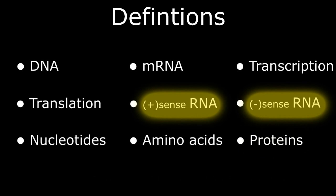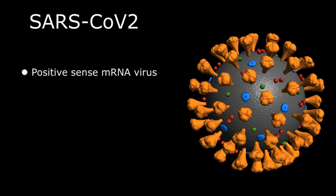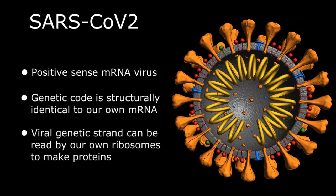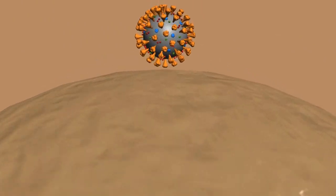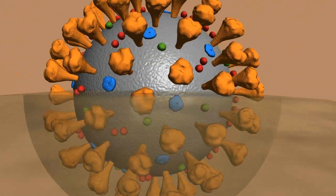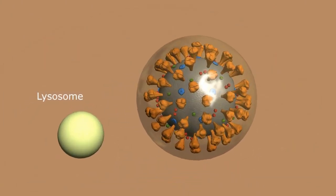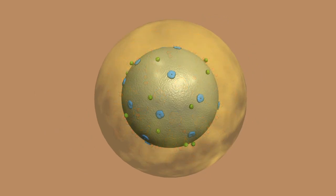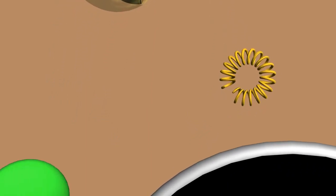The last two definitions can be graphically demonstrated with the infecting agent of COVID-19, the SARS-CoV-2 virus. SARS-CoV-2 is called a positive-sense messenger RNA virus because the genetic code it contains within its core is structurally identical to our own messenger RNA. As such, the viral genetic strand can be read directly by our own ribosomes to make proteins. Once the virus passes through the outer membrane of our cells forming an encapsulated vesicle, enzymatic lysosomes fuse with the vesicle, digesting the structural proteins of the virus and releasing the viral genetic code into the cytoplasm of the host cell. Since the viral genome is positive-sense messenger RNA, it can then be read directly by our ribosomes to make viral proteins.